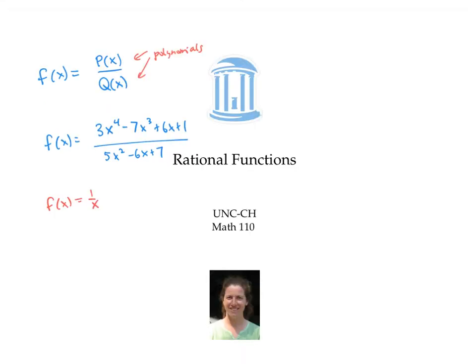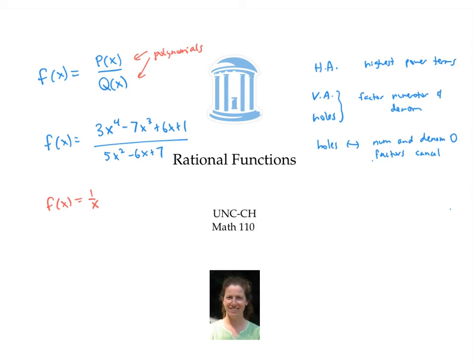In this video, we learned how to find horizontal asymptotes of rational functions by looking at the highest power terms. We learned to find the vertical asymptotes and holes by looking at the factored version of the functions. The holes correspond to the x values that make the numerator and denominator zero, whose corresponding factors cancel. The vertical asymptotes correspond to the x values that make the denominator zero, even after factoring out any common factors in the numerator and denominator.